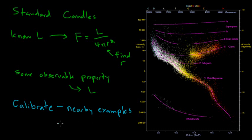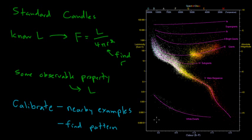We also have to simply find some pattern between a property of whatever our light source is that we can easily measure and the luminosity. In this case, we noticed that there was a strong correlation between the color of these stars and the luminosity. But we can have examples with different properties that we're going to actually be able to measure — it's not always going to be color. And again, the more nearby examples that we can see to calibrate this curve, the better off we're going to be.